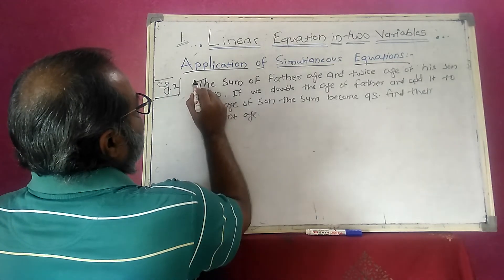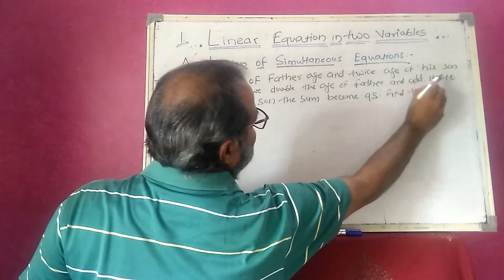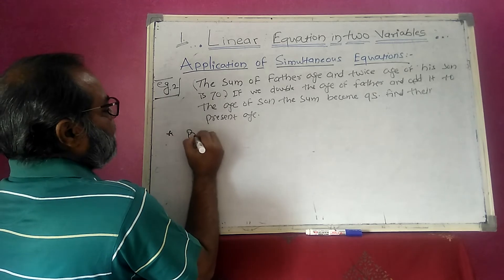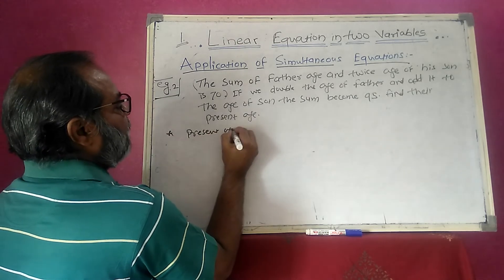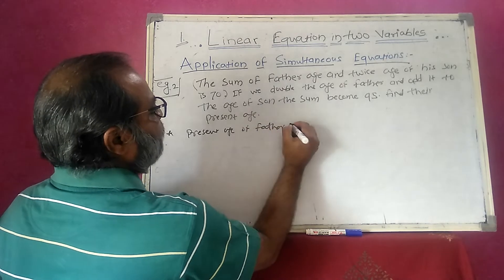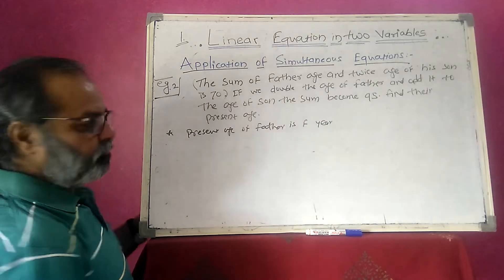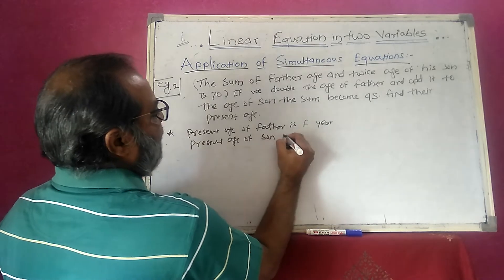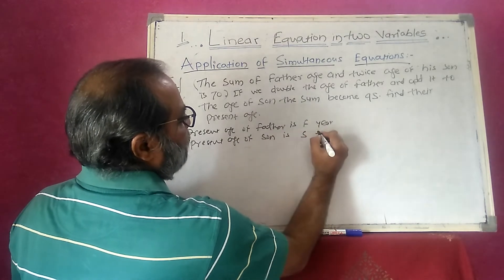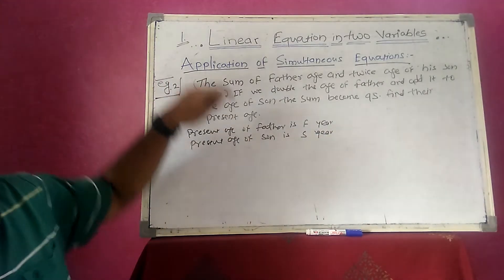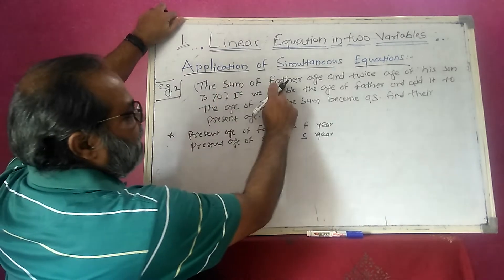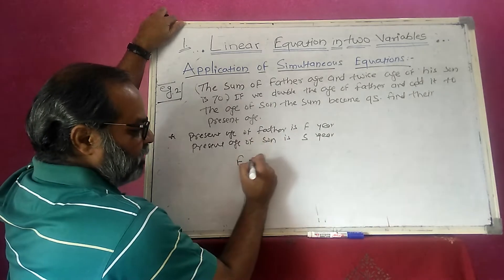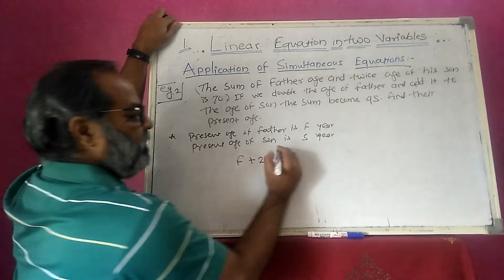For the first equation: the sum of the father's age and twice the age of his son is 70. I assume the present age of father is f and the present age of son is s. So the first equation becomes: f plus 2s is equal to 70.